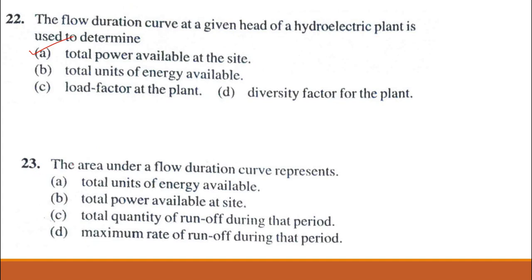Problem 23. The area under flow duration curve represents: total units of energy available, total power available at the site, total quantity of runoff during that period, or maximum rate of runoff. The answer is total quantity of runoff during that period.